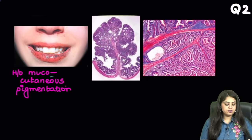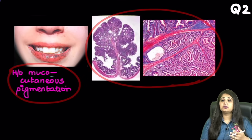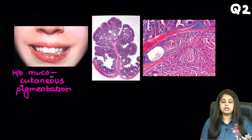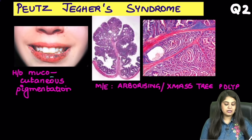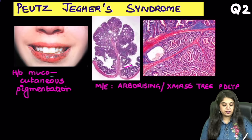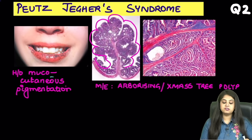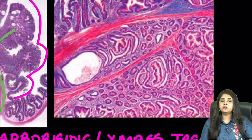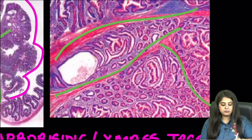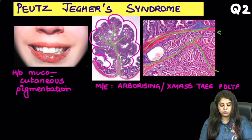Moving on to question 2: a female with mucocutaneous pigmentation and an intestinal biopsy. This is the classical Peutz-Jeghers syndrome, and the biopsy shows a polyp known as the classical arborising or Christmas tree polyp. You can see the branching pattern here. In previous NEAT PG exams it has been asked what makes the branches of this tree — if you zoom in, you can see fibres going like this making branches, which are actually smooth muscle fibres forming the branches of the arborising tree.